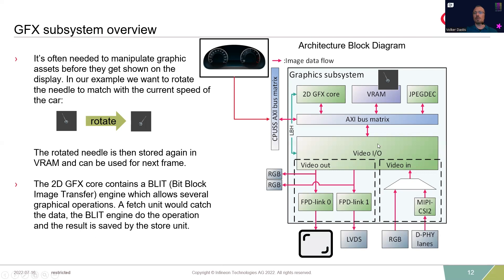This rotated needle would then be sent to the display. We have for graphical operations the 2.5D engine, which is part of the GFX core. This is a so-called blit engine which allows a lot of graphical operations — in our case it will be just a rotation, a 2D rotation, not a 3D rotation. This engine has a fetch unit which takes the pixel information out of the VRAM from our needle and fetches it, then a rotation is done, and the store unit stores the result back into the VRAM. The 2.5D engine knows which commands it needs to execute from a command list stored in VRAM, and it just works through those lines of commands.